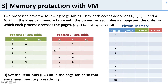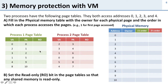Now let's look at memory protection with virtual memory. We have two processes. Here's process 1's page table — its virtual addresses and how they translate to physical addresses — and process 2's page table with its virtual and physical addresses. Both processes are going to access memory locations 0, 1, 2, 3, and 4. The first question is: which process owns each page in physical memory?